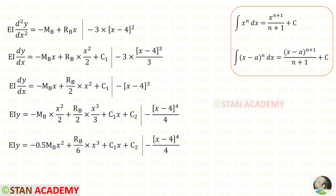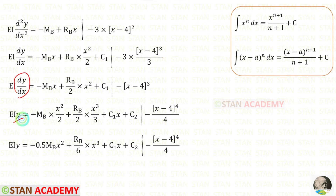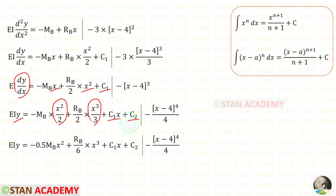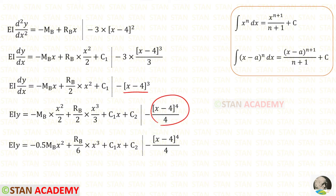Let us integrate this equation again on both sides. When we integrate dy/dx we get y. When we integrate x we get x²/2, and x² gives x³/3. When we integrate C1 we get C1·x. C2 is the new constant. When we integrate (x minus 4)³ we get (x minus 4)⁴ upon 4. 1 upon 2 is 0.5, and 2 into 3 gives 6.